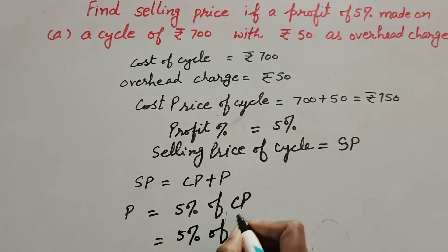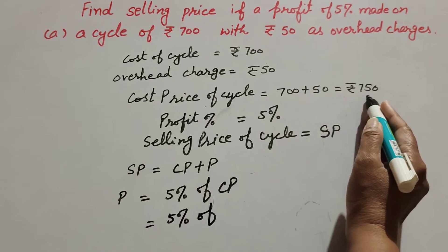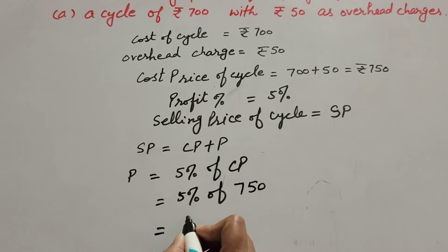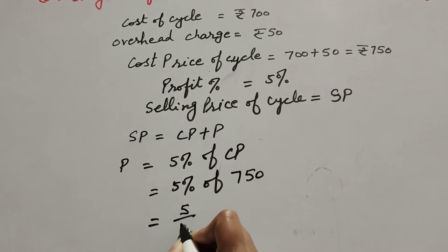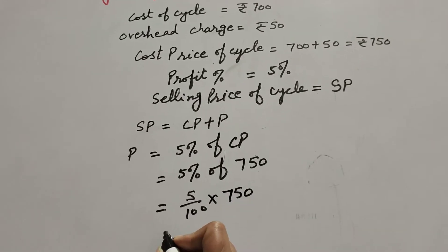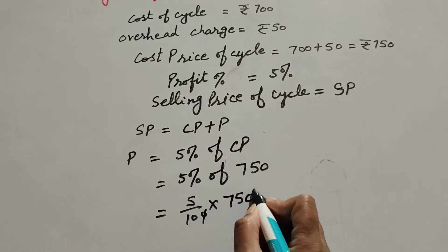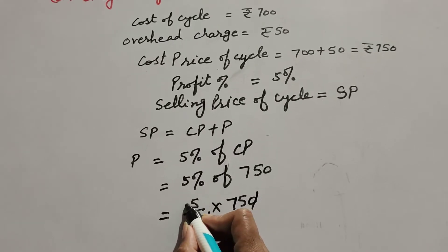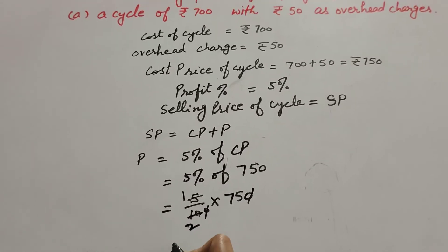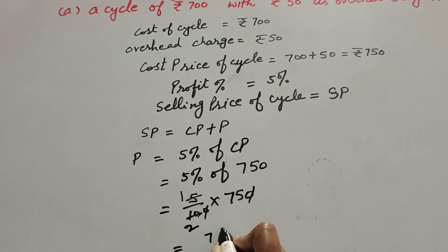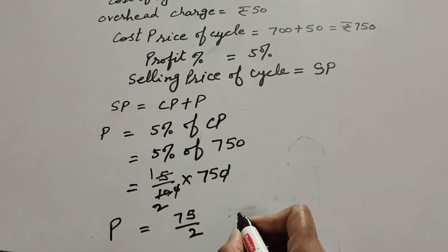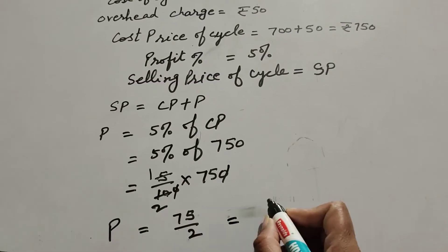Five percent of 750 — 750 is cost price — so five percent means five over hundred, multiply by 750. The zero in the denominator and zero in the numerator are cancelled; five and ten are again divisible by five so we cancel them. It is equal to 75 over 2.